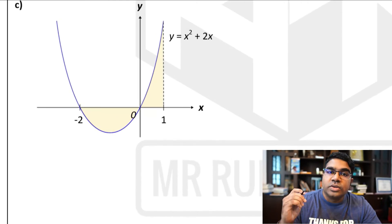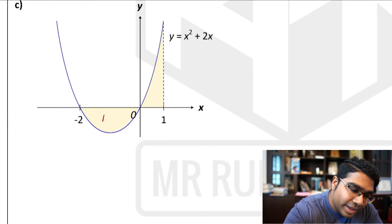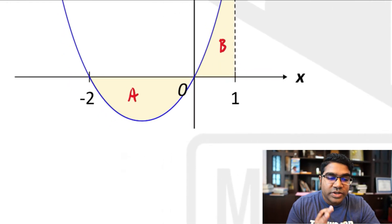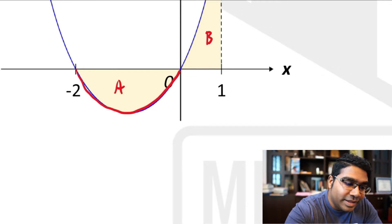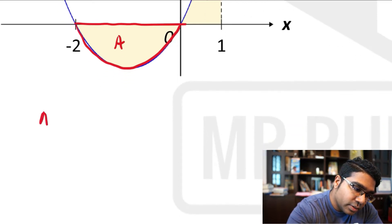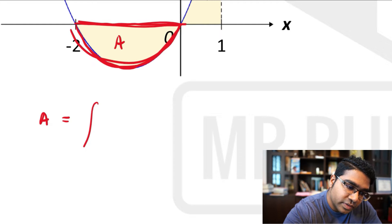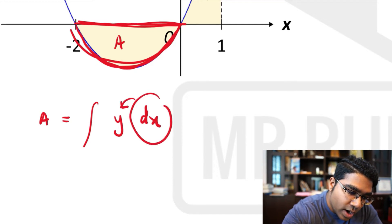The first step is to always identify the boundaries of the region. There are two regions here — let's call them A and B. If you look at region A, this region is bounded by the curve as well as the x-axis. Therefore we know we have to find this area by integrating the curve with respect to x. The curve is represented by y dx, so we integrate y dx.